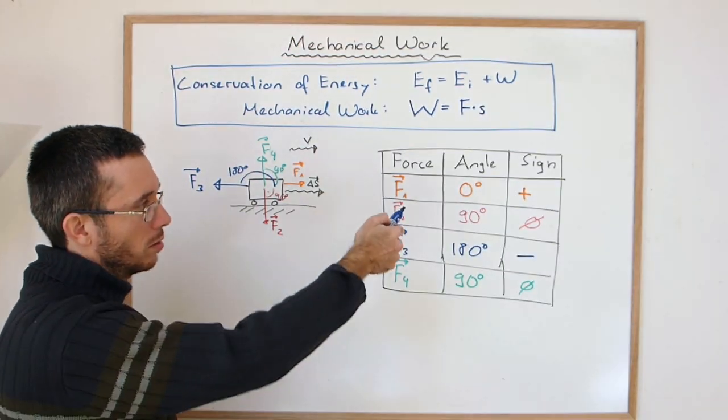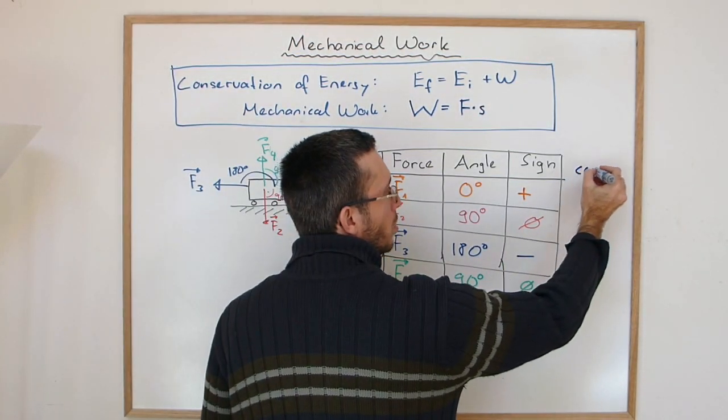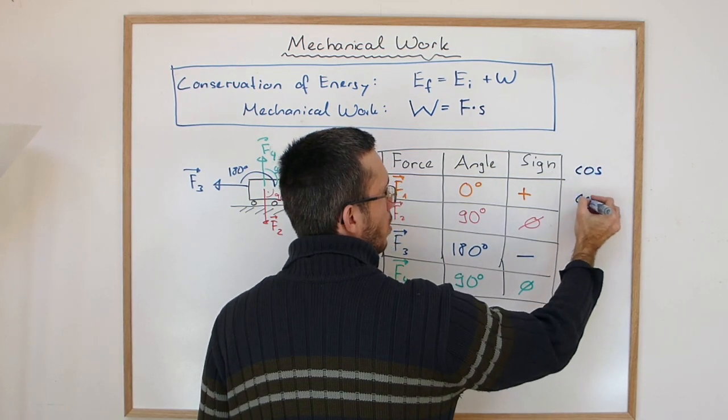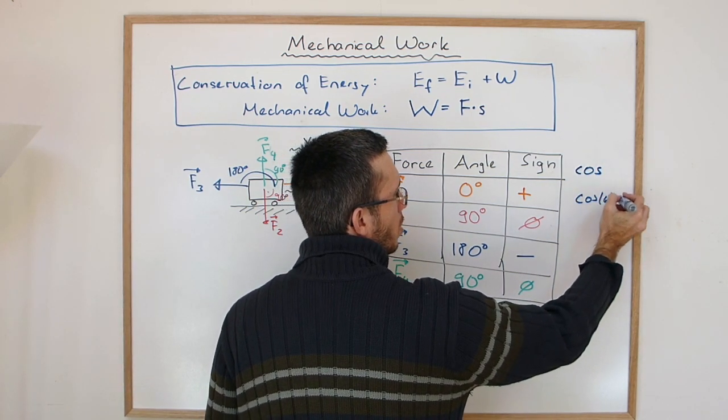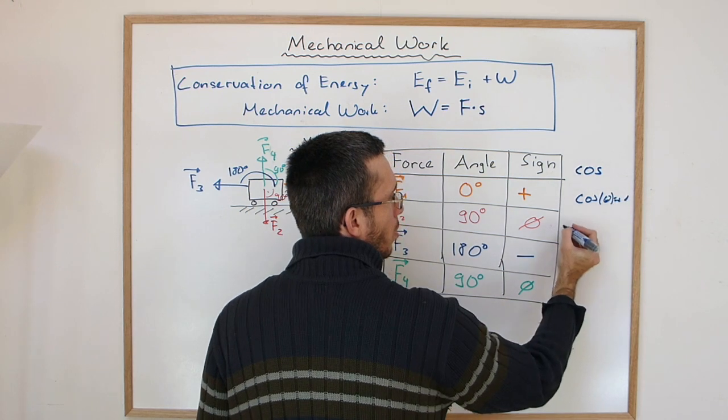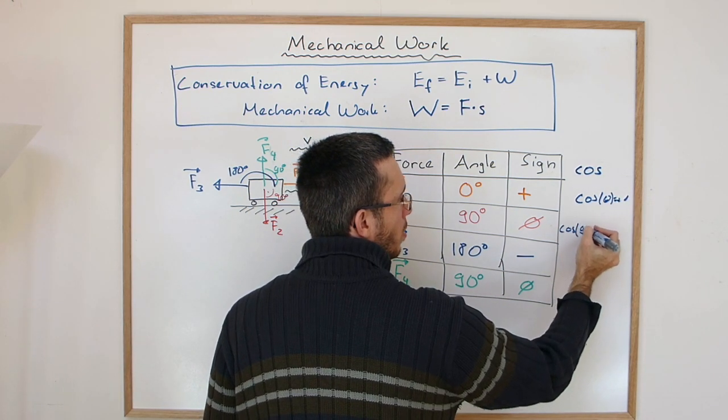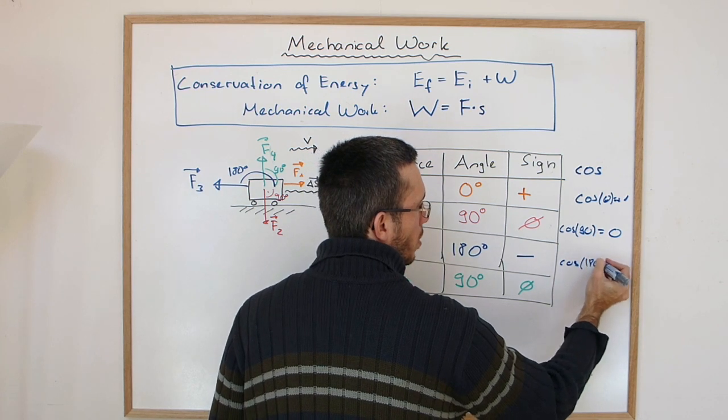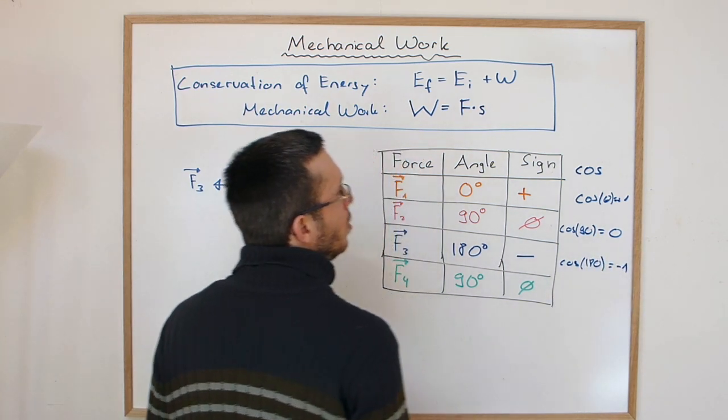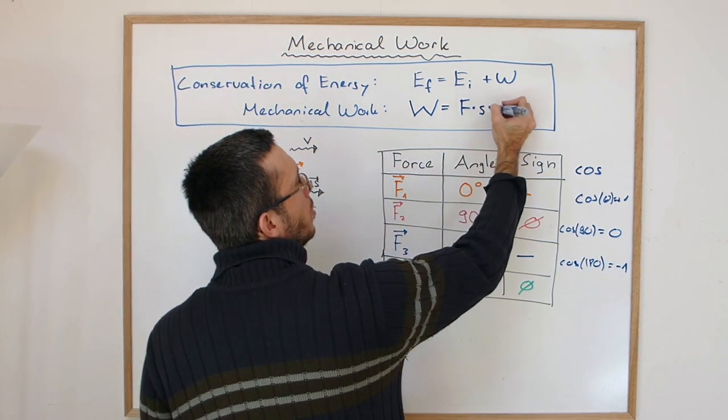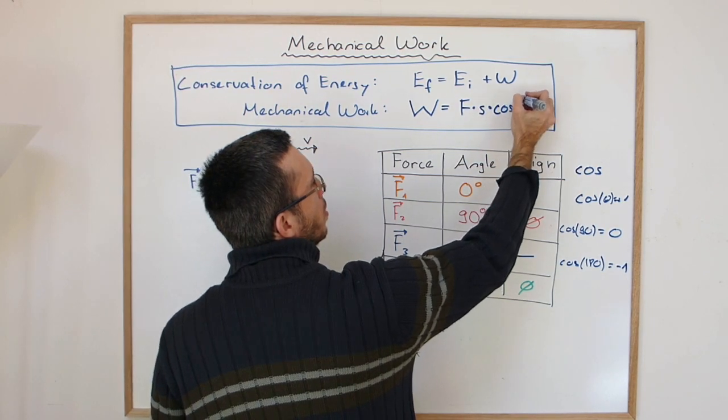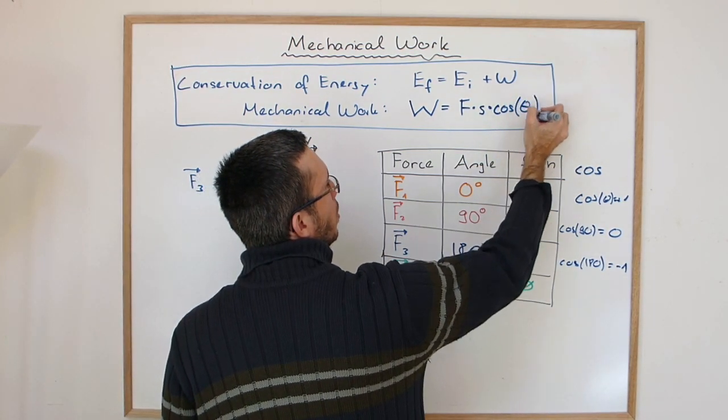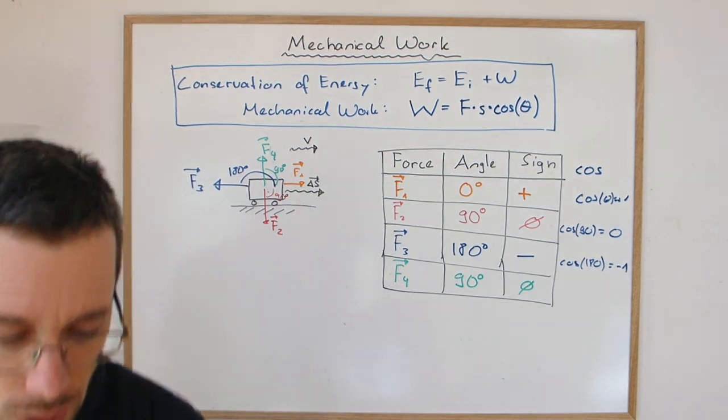Well yes, correct. Cosine, right? Cosine. Cosine of zero is plus one. Cosine of 90 is zero and cosine of 180 is going to be minus one. So all we have to change here is cosine of the angle. And we're good.